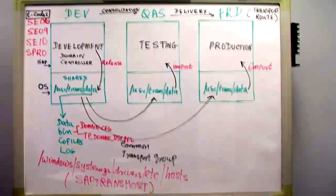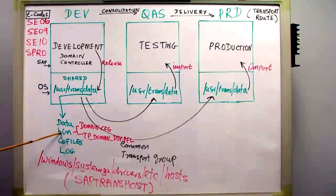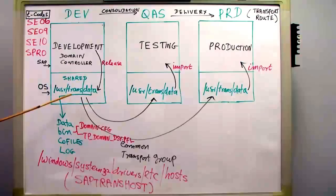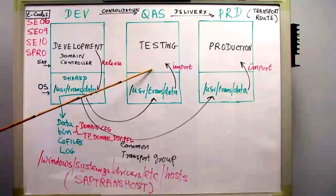Under bin, we have the domain config file and transport domain profile. In cofiles, we have the control files, and in log, we have the logs. All these are under usr/trans. After the transport is released to the operating system level using the TP program, I can import it in the testing system.